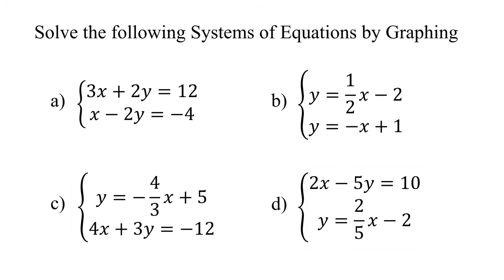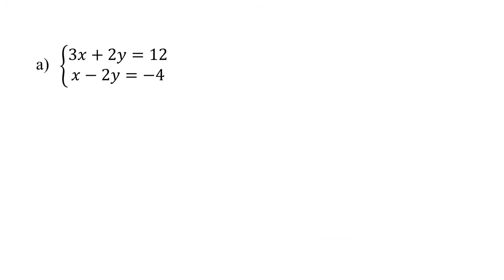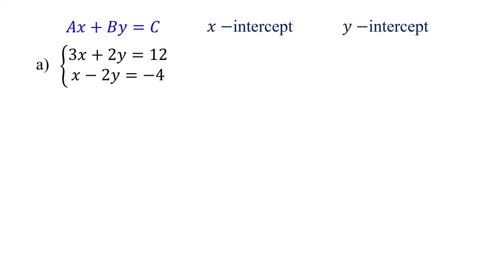The first step in solving a system of equations graphically is to plot the graph of each equation. In this example, both equations are given in standard form, and the most straightforward method for graphing such equations is the intercept method. So, we will start by finding their x-intercept and y-intercept.